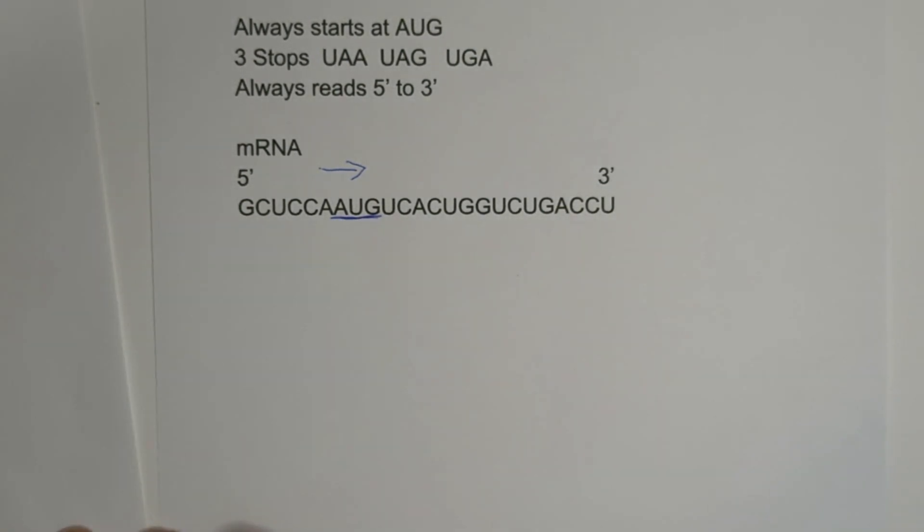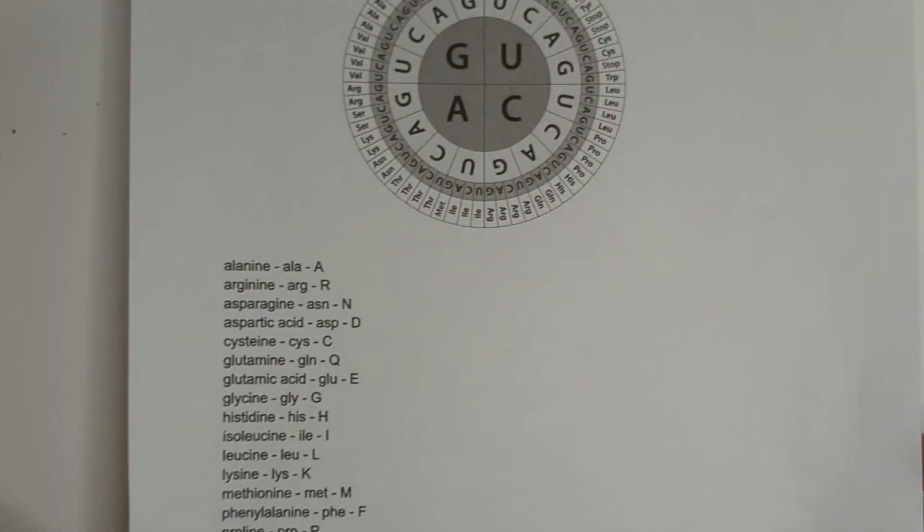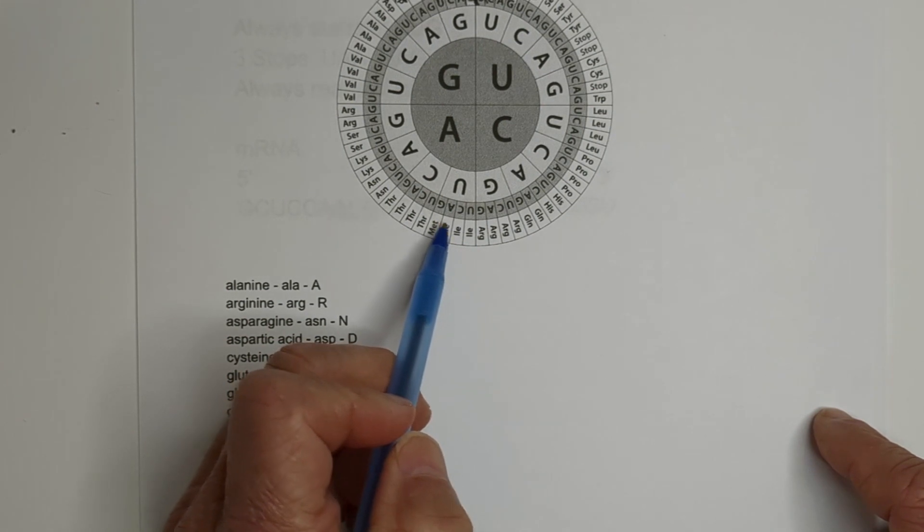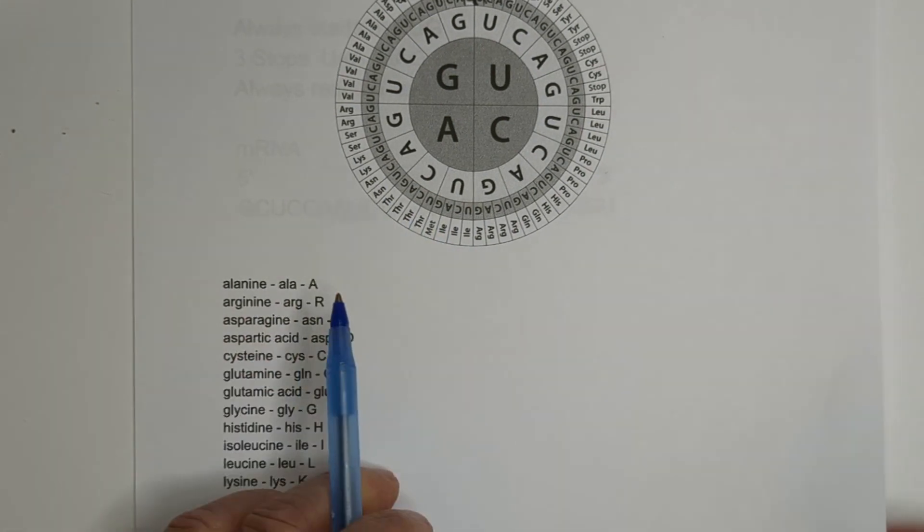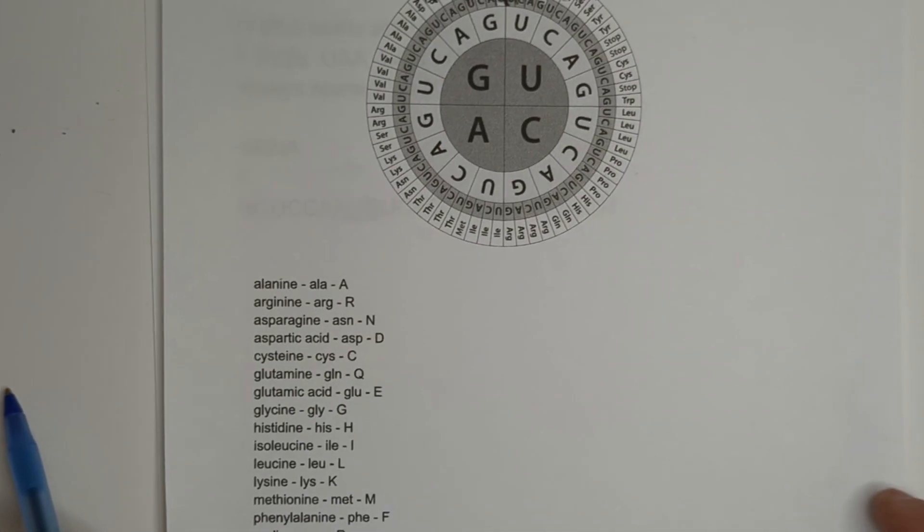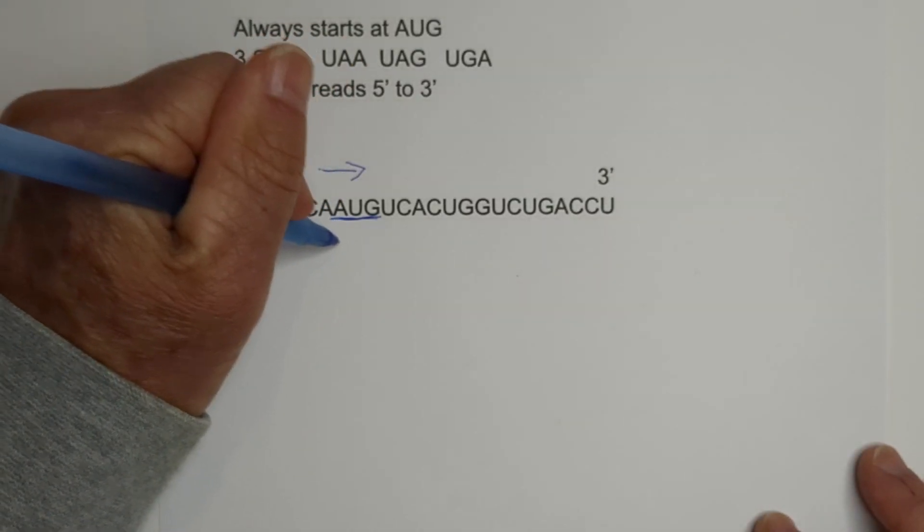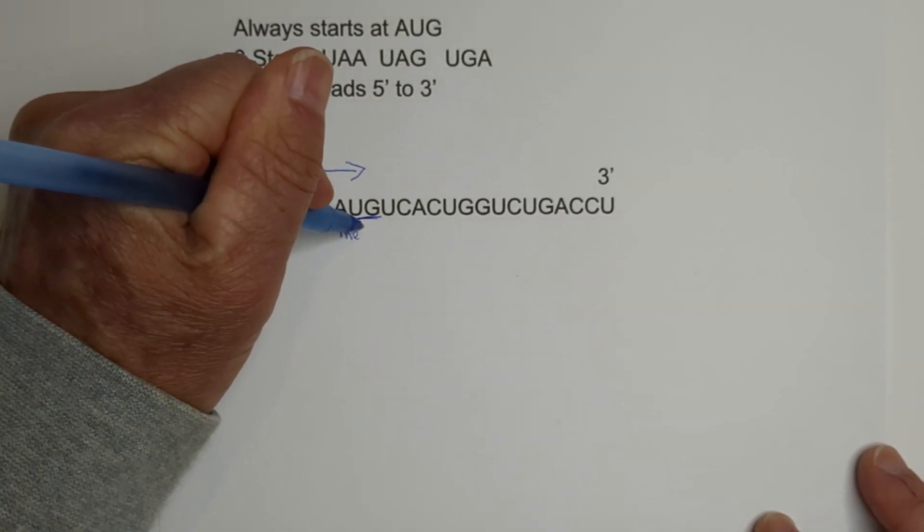and we then would use this chart, and you have AUG, which is MET, and if I go down here, methionine is MET, right here. Okay, so I'm going to go MET,